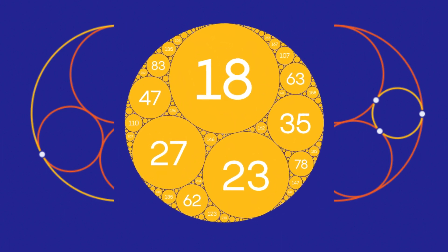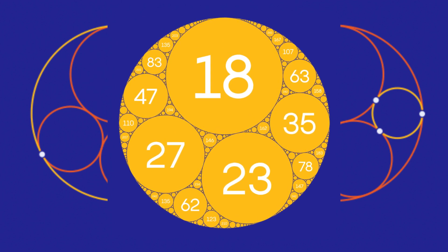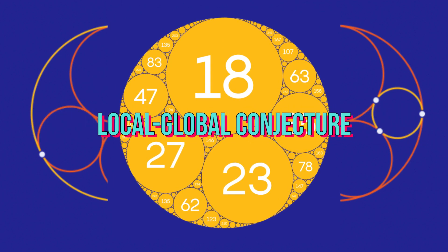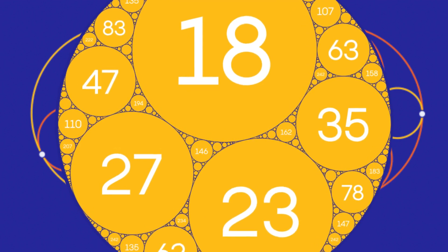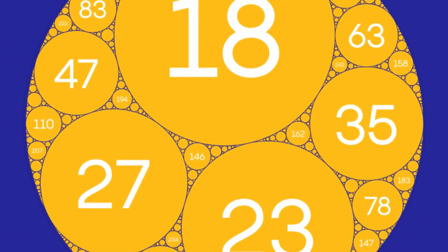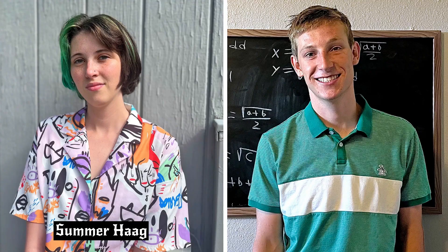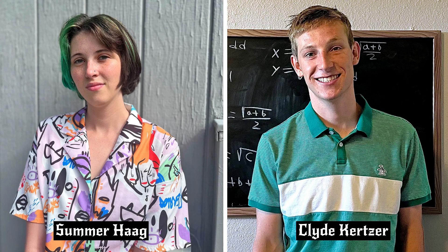The conjecture in focus is known as the local global conjecture, which posits that specific integers will appear in the curvature of smaller circles within these packings. This conjecture is widely acknowledged and regarded as a fundamental concept. However, two students, Summer Hogg and Clyde Kurtzer, have overturned this long-standing belief.